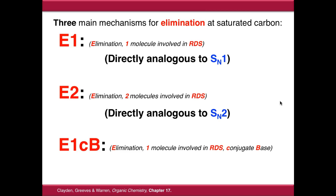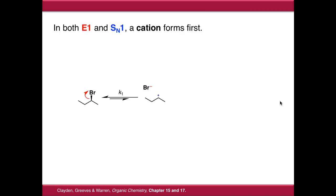E1 and E2 directly map onto SN1 and SN2, so if you've not already watched the substitution video, I'd recommend that you do that now. We'll come onto E1CB at the end. Starting with E1: the E1 and SN1 reactions have both got the same first step, which is the loss of a leaving group to give us a carbocation intermediate and some kind of usually anionic species.